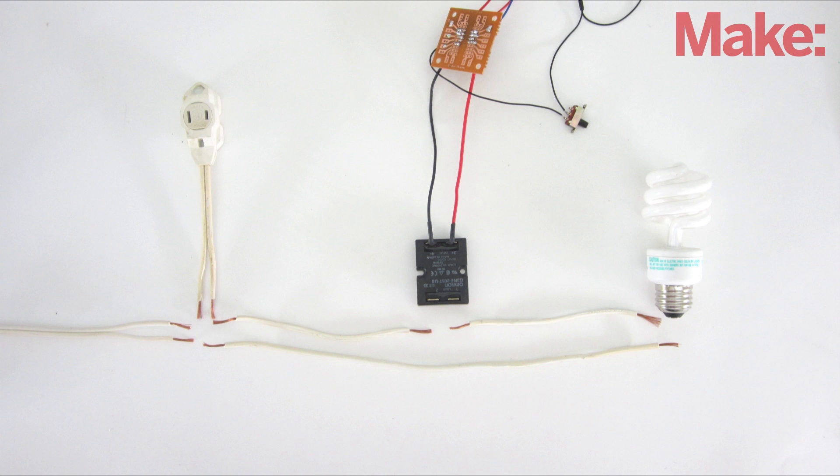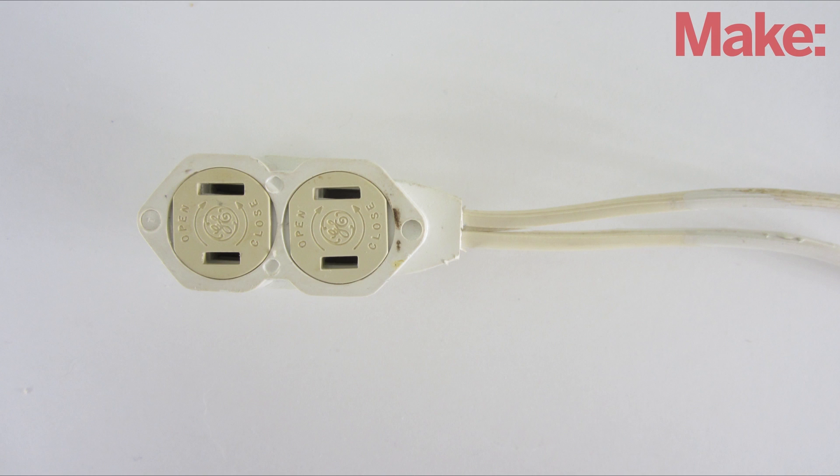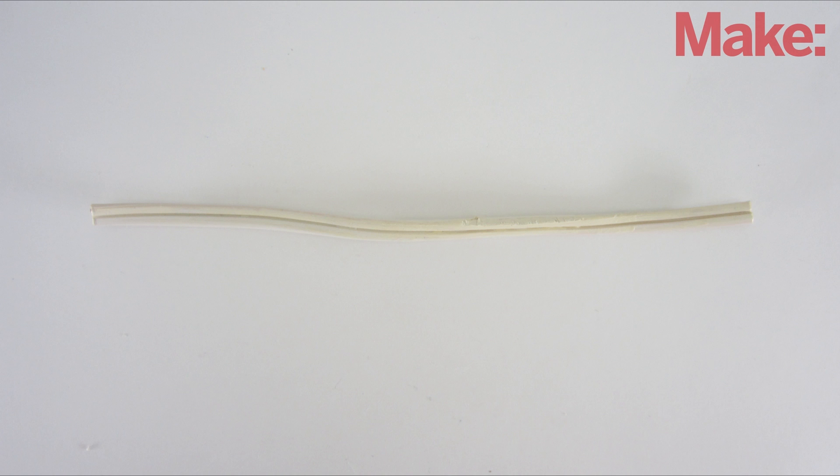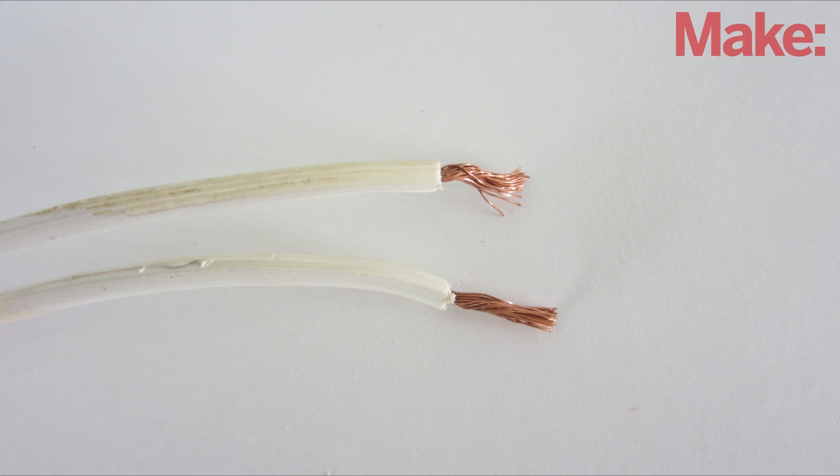To connect power to the whole system, I'm using an extension cord that I cut into several sections. Start by cutting the cord 6 inches from the female end. Then, cut another section that's about 1 foot long. Separate the two wires of this section and cut one of them in half. Strip the insulation off all the cut ends.